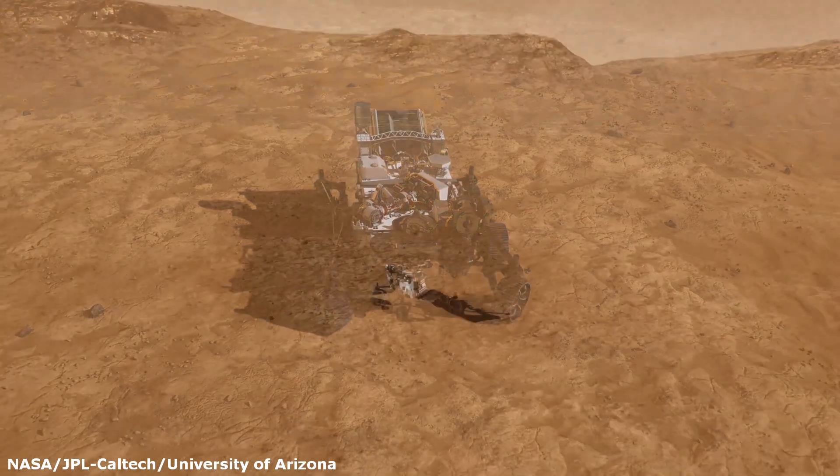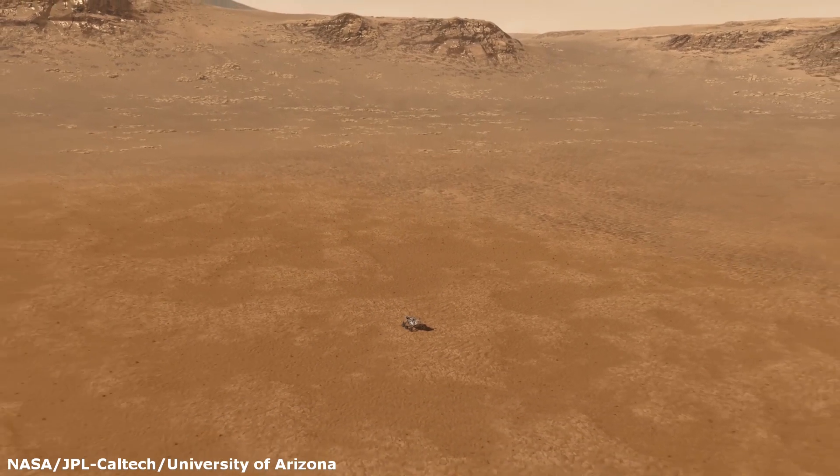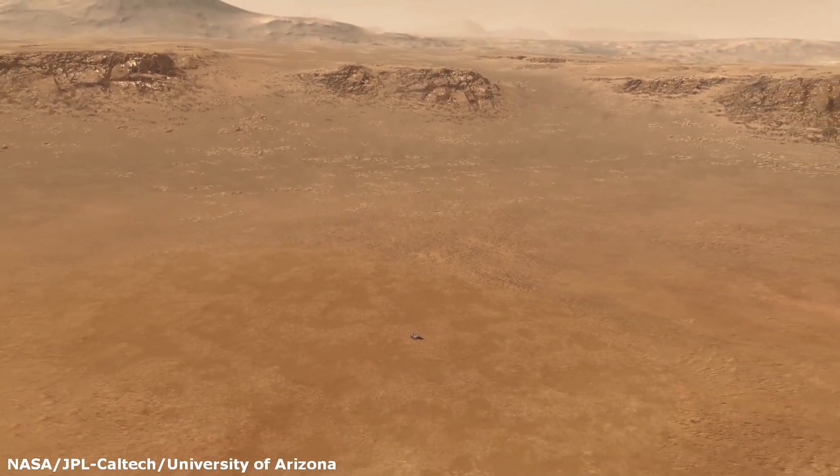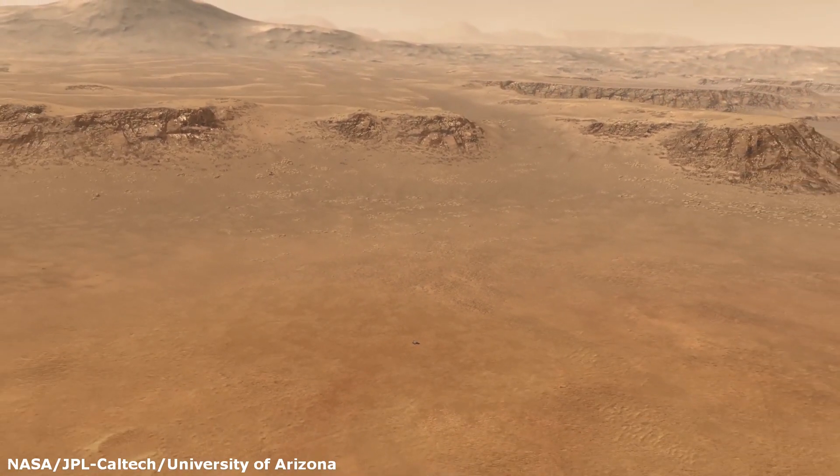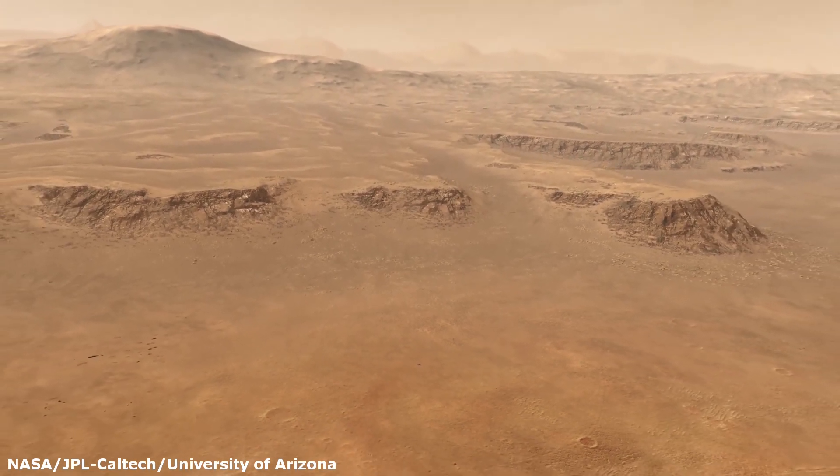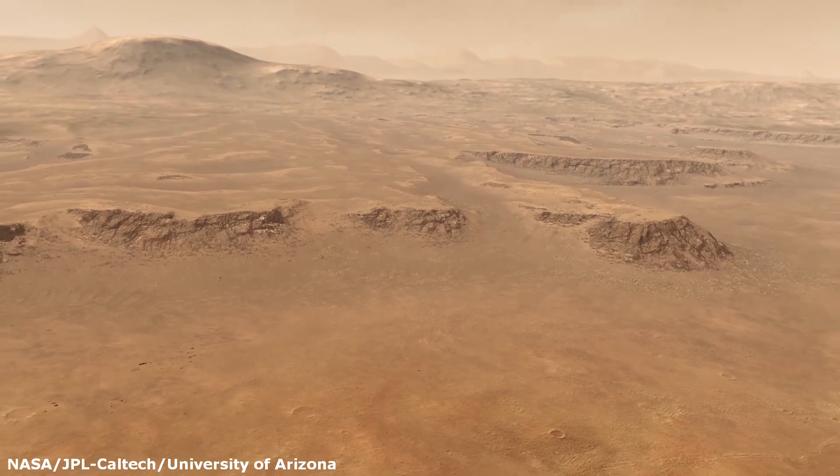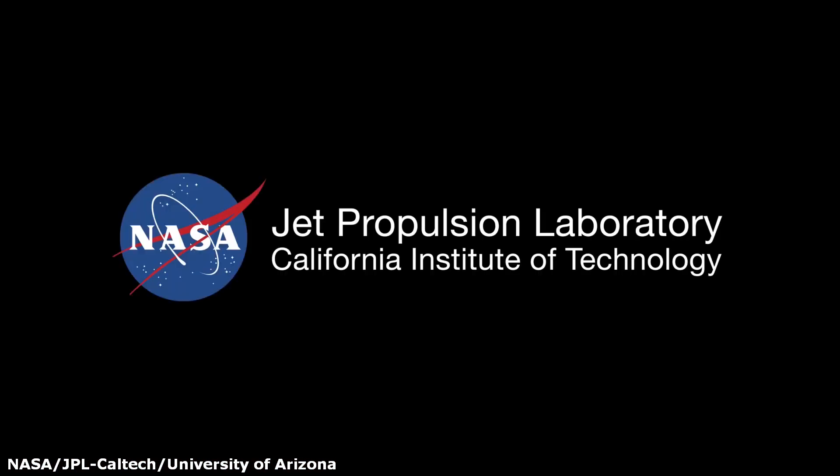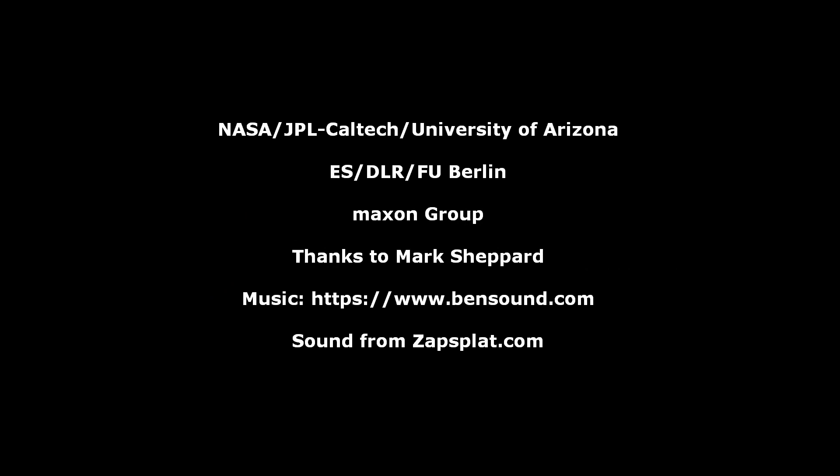The rover will climb the gentle slopes behind it, about 100 meters high, that mark the edge of the delta and will investigate for signs of past microbial life. It will later move on to the hills behind, rising 500 meters, marking the shores of the ancient lake. We're confident that this will be another success story from NASA and we're looking forward to the results.